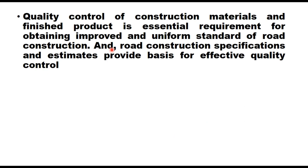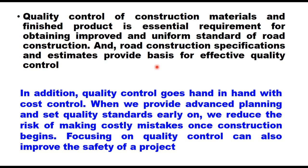Quality control of construction materials and finished product is an essential requirement for obtaining improved and uniform standard of road construction. Road construction specifications and estimates provide the basis for effective quality control. In addition, quality control goes hand in hand with cost control. When we provide advanced planning and set quality standards early on, we reduce the risk of making costly mistakes once construction begins. Focusing on quality control can also improve the safety of a project, and therefore both quality of material and quality of construction are important.